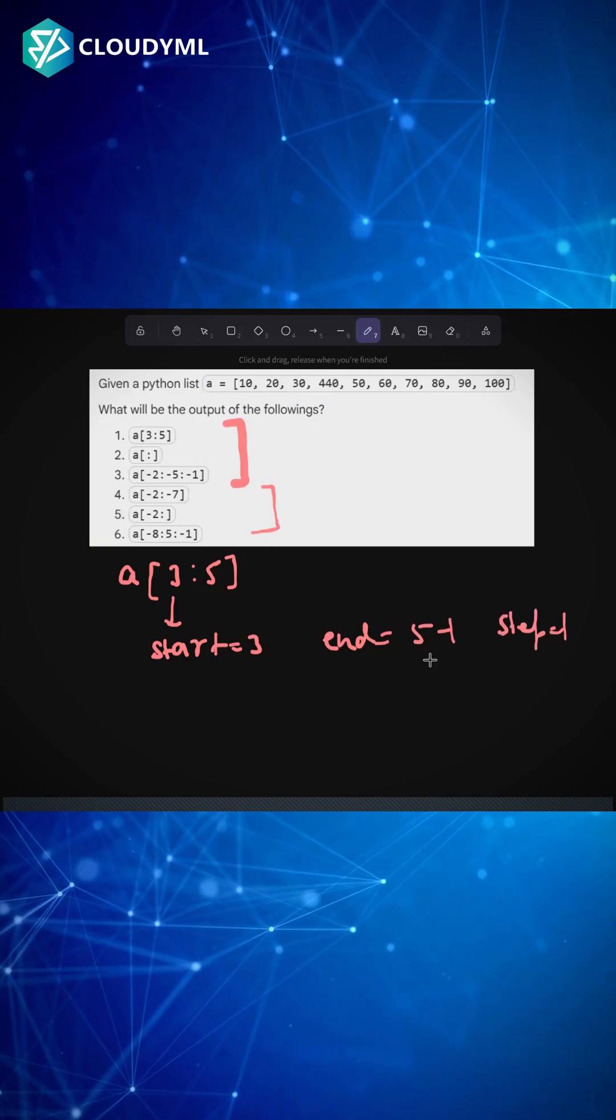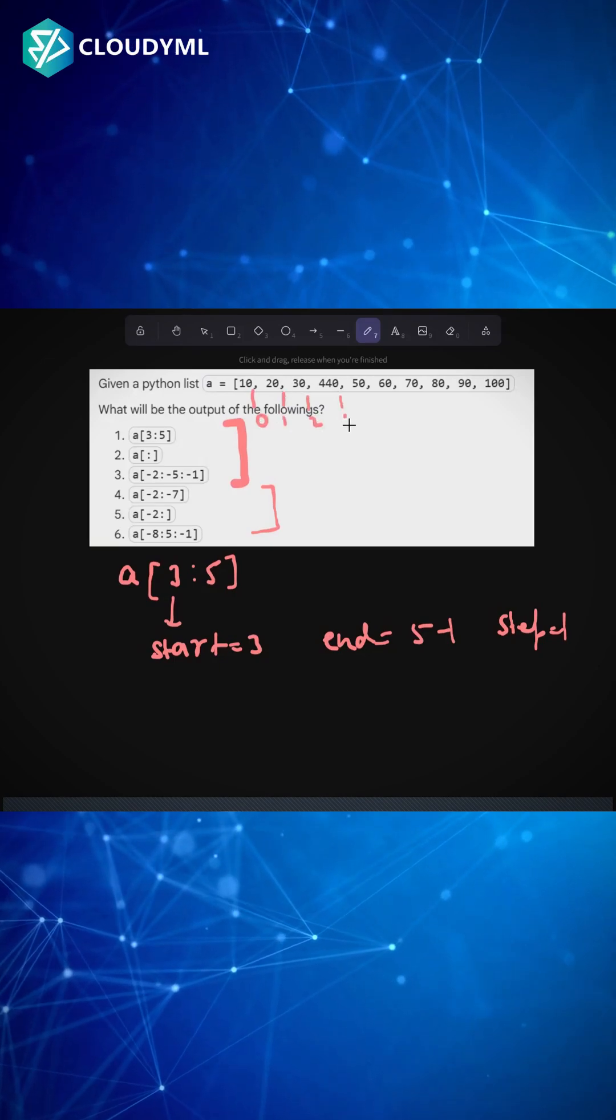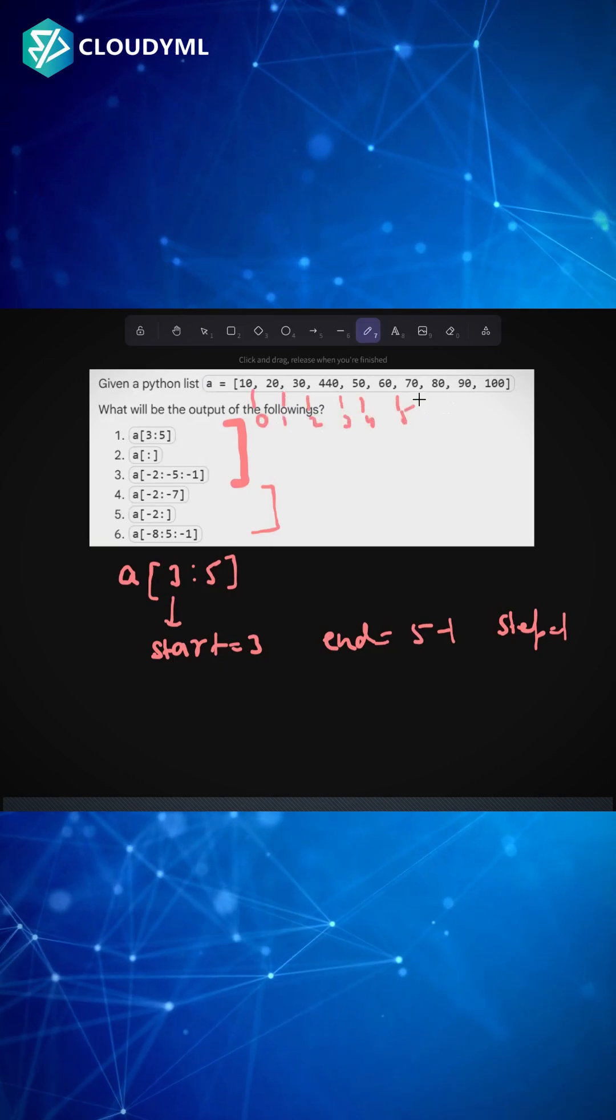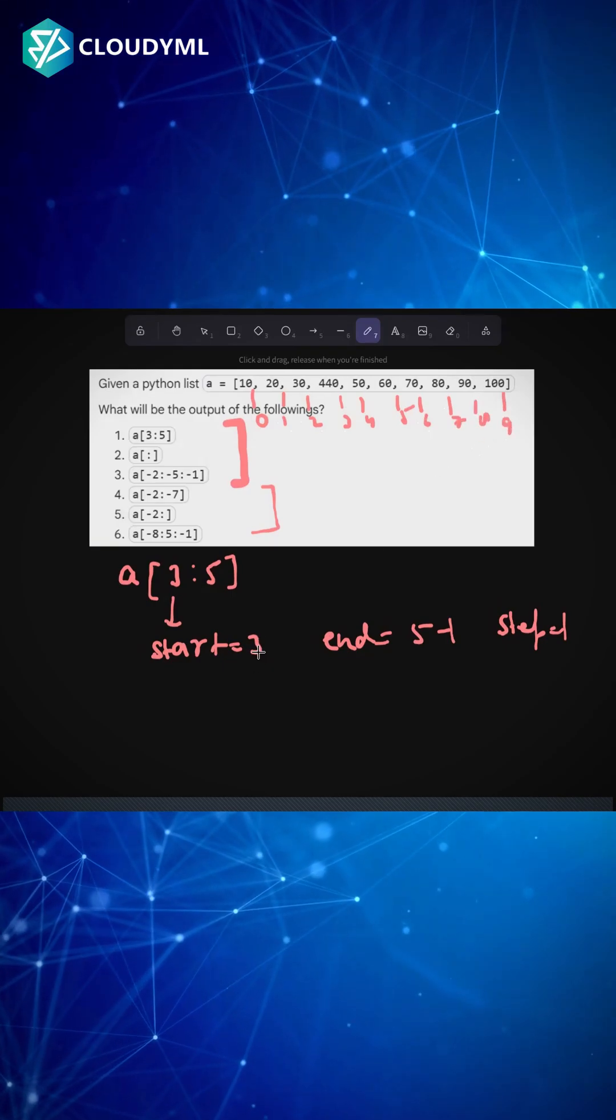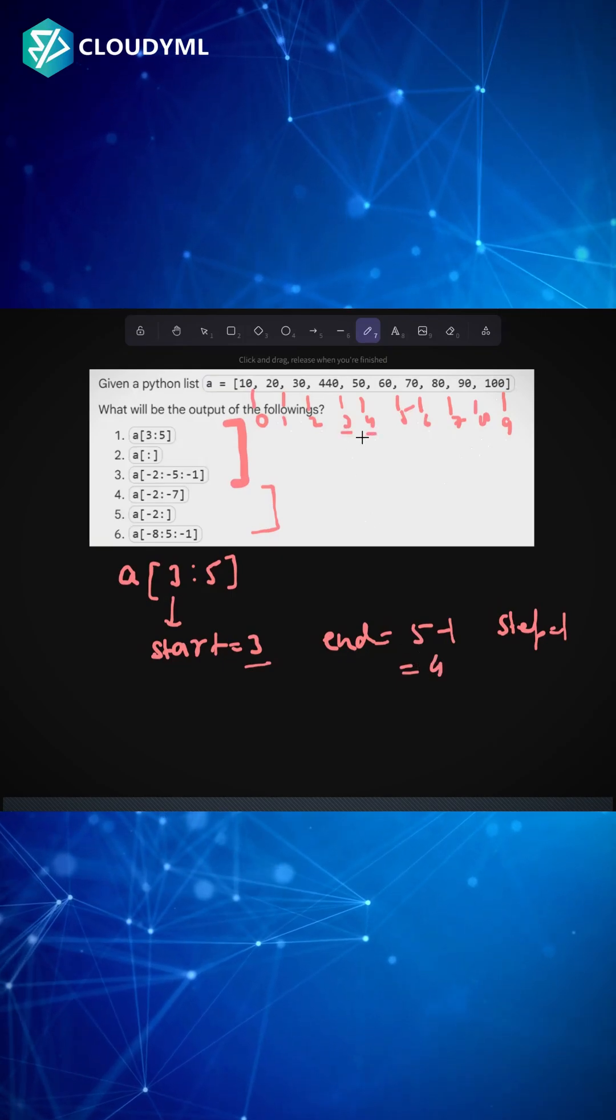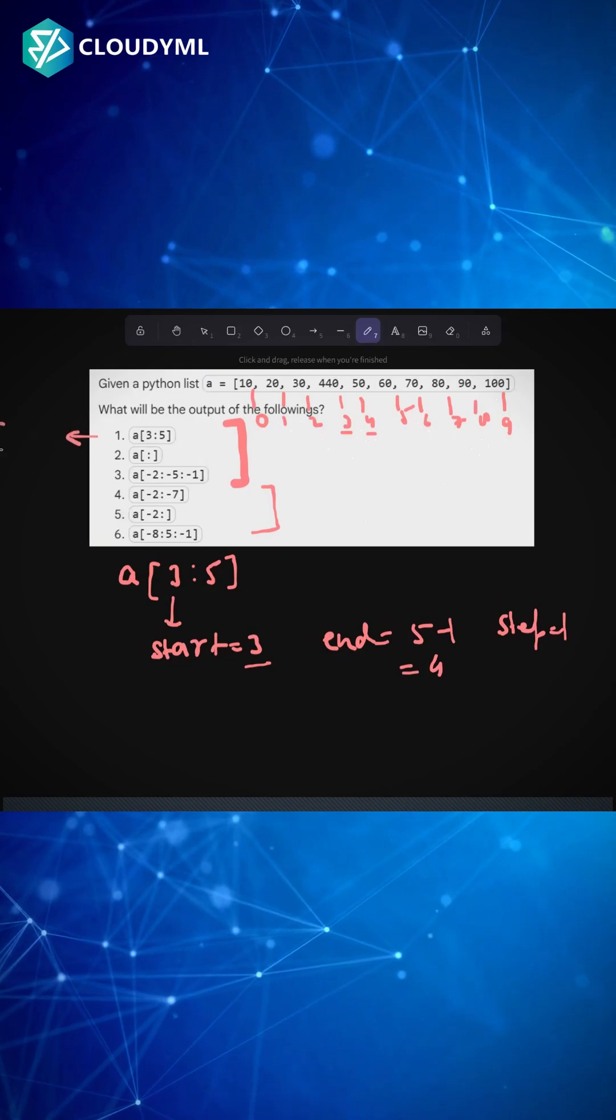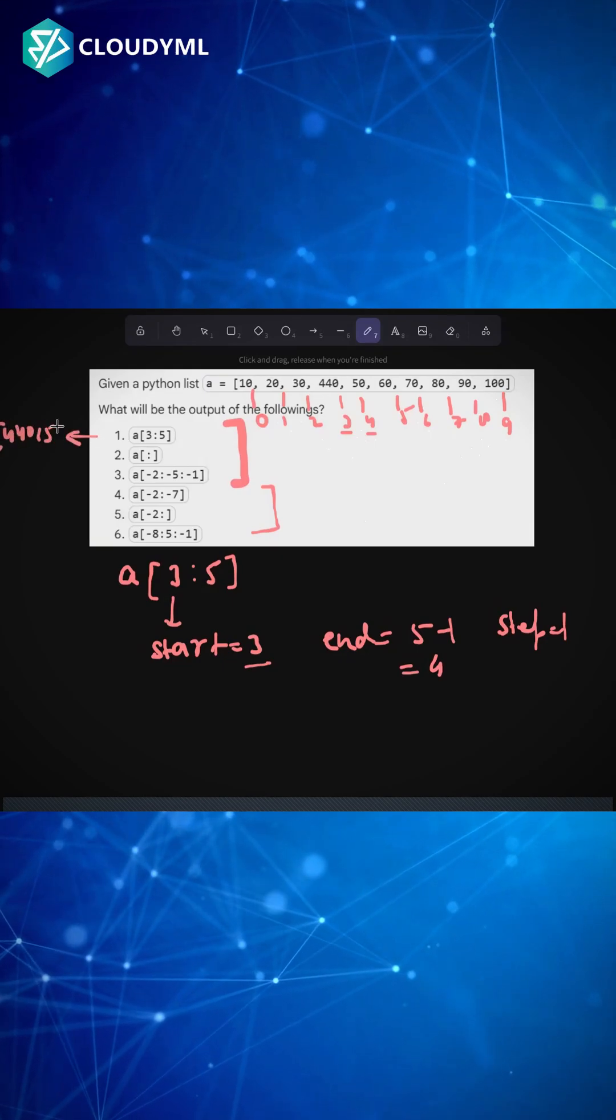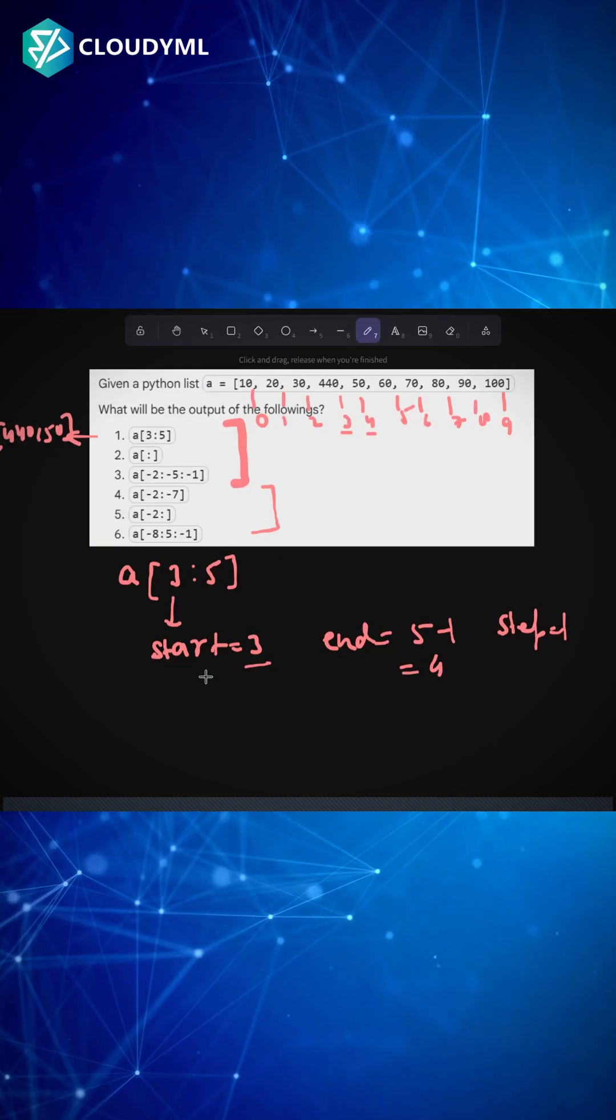The indices are: this is 0, this is 1, this is 2, this is 3, this is 4, this is 5, 6, 7, 8, 9. If I say start 3 and 5 minus 1, that is 4, it means I only want numbers at index 3 and 4. So the answer would be [440, 50]. The next question is a[:].